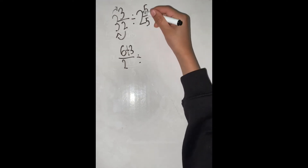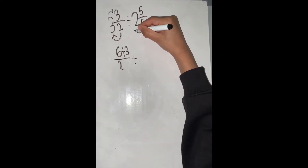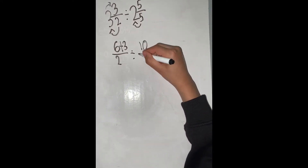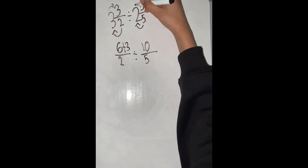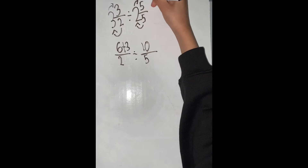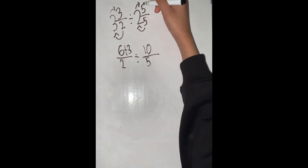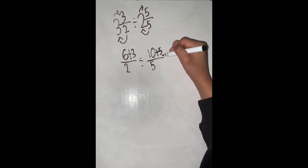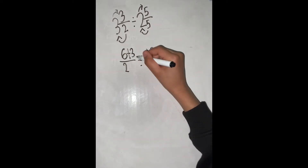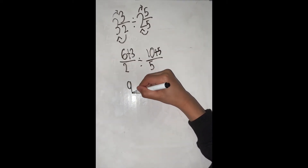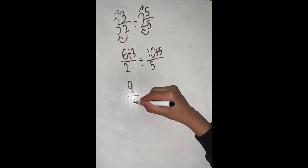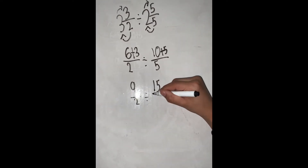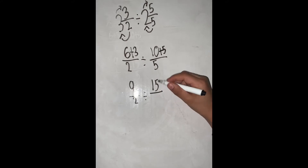Divide by, and we are going to do the same with this one. 5 times 2 is 10, and our denominator is still going to be 5. And we are going to add the numerator, so we are just going to write plus 5. 6 plus 3 is 9, and then our denominator is going to be 2, divided by — and 10 plus 5 is 15, over 5.